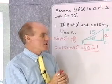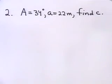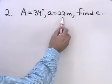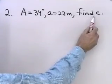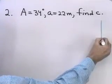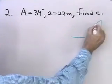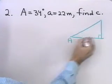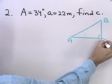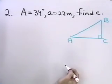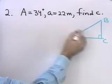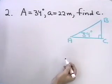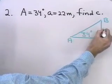Let's try another problem. This time, angle A is 34 degrees and side A is 22 meters. Let's find side C. I'll draw a reference triangle, labeling angle A, angle B, and the right angle C. Angle A is 34 degrees, and side A is 22 meters. I want to find the length of side C.